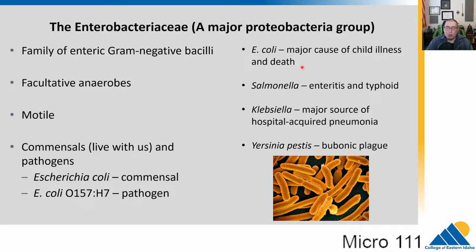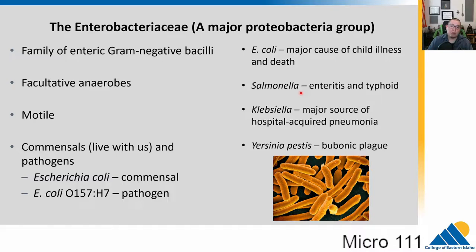E. coli is a huge issue for children — it affects children particularly harmfully because they're so small, and when they have diarrhea and bleeding, it can become very deadly very quickly. Salmonella, another enteric pathogen, can also cause typhoid fever. Klebsiella is a major source of hospital-acquired pneumonias and lung infections. And then we have Yersinia pestis, which causes the bubonic plague.